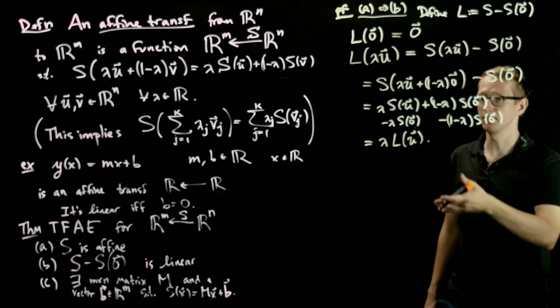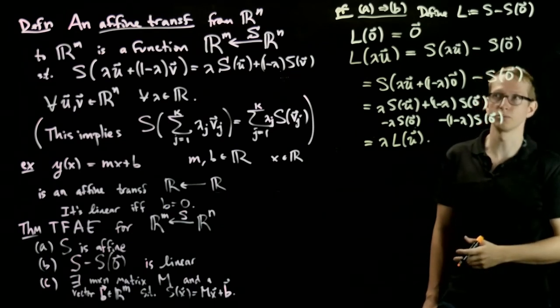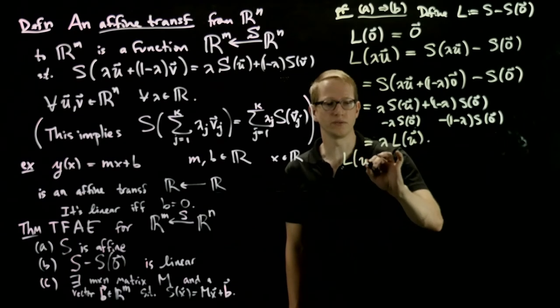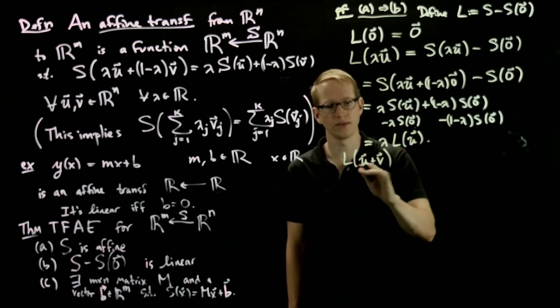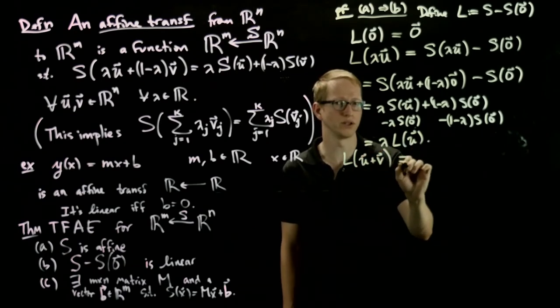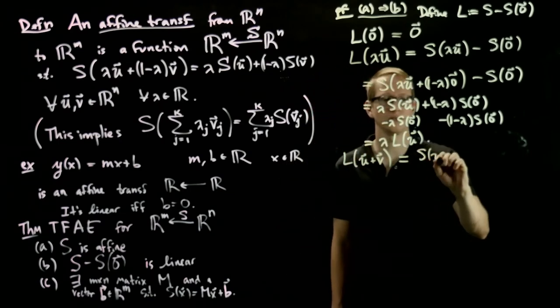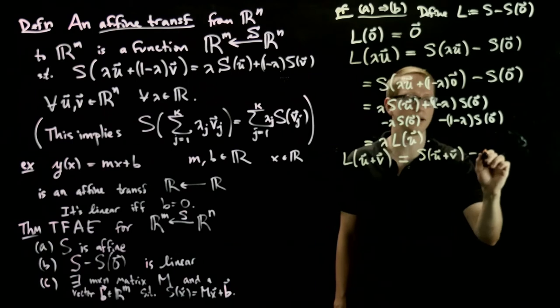So the first condition of linearity is proven. And then the second condition is if we take a linear combination, this also has to go to a linear combination as well. So let's use the definition: this is s(u + v) - s(0).